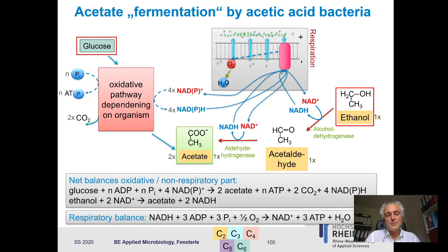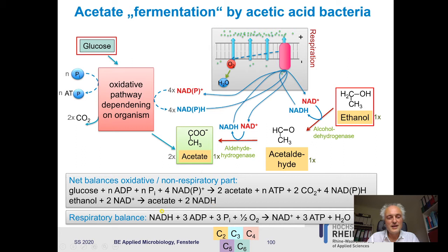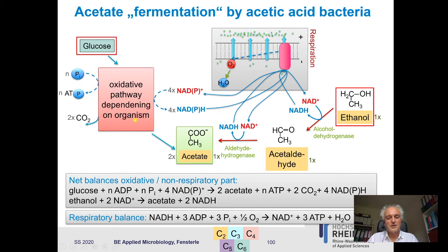The net balance depends on which non-respiratory path you take. If you start from glucose, you produce some ATPs via substrate-level phosphorylation — how many depends on the pathway — plus four NADHs. If you go from ethanol to acetate, no ATP is produced in that pathway directly — only NADHs. Then for respiration: NADH is oxidized with half a molecule of O₂ and produces approximately three ATP. So from two NADHs you get six ATPs via respiration. With four NADHs total, you get twelve ATPs, plus any ATPs produced directly via substrate-level phosphorylation.